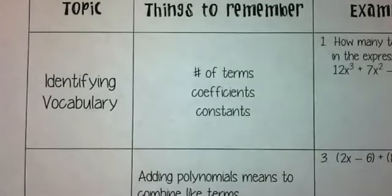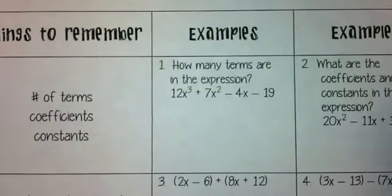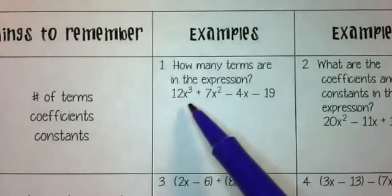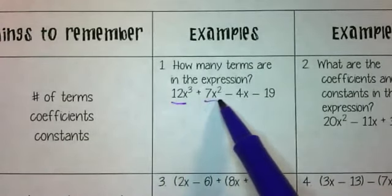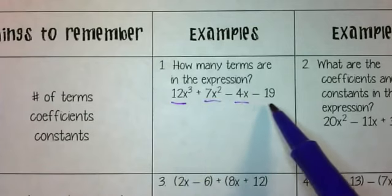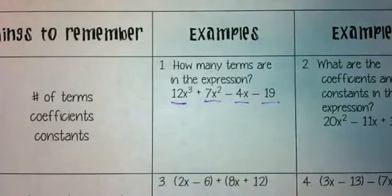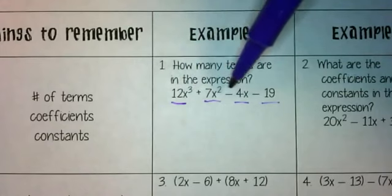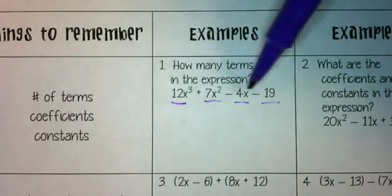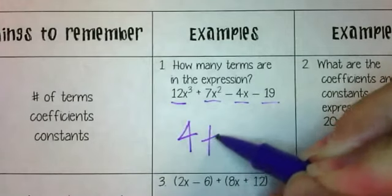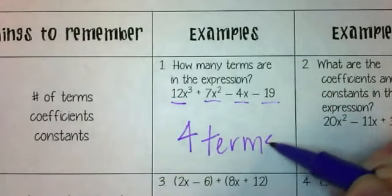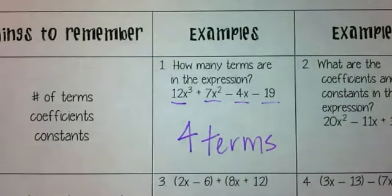We talked about coefficients and constants. For our first example: how many terms are in the expression? When we look for terms, they are going to be separated by addition and subtraction. So when I look and see that there are three addition or subtraction signs, that tells me there are four terms in this polynomial.